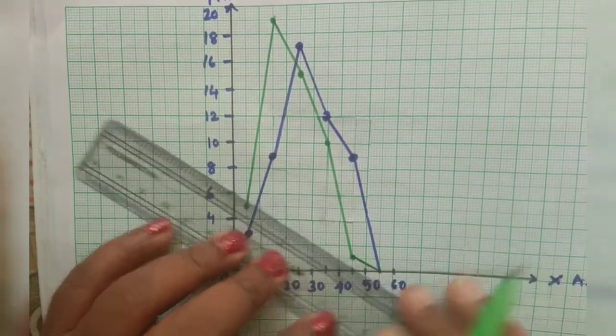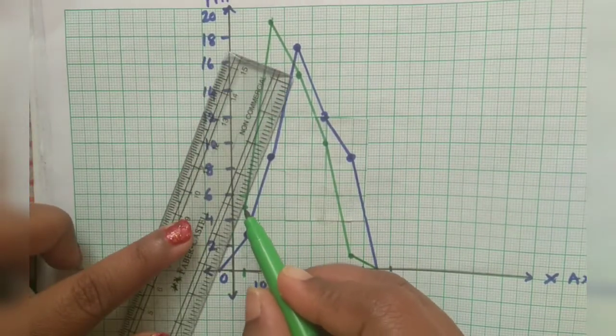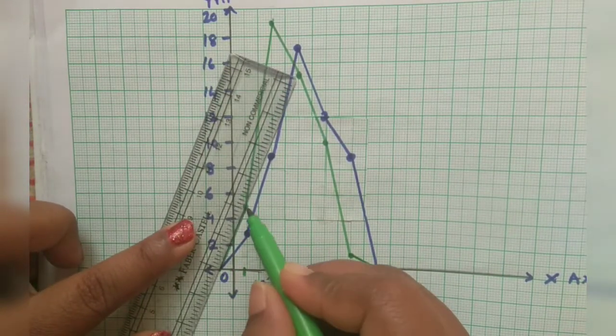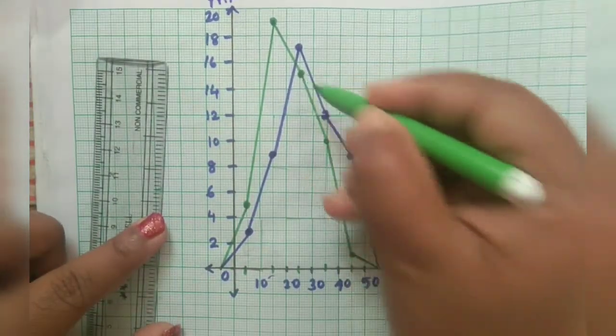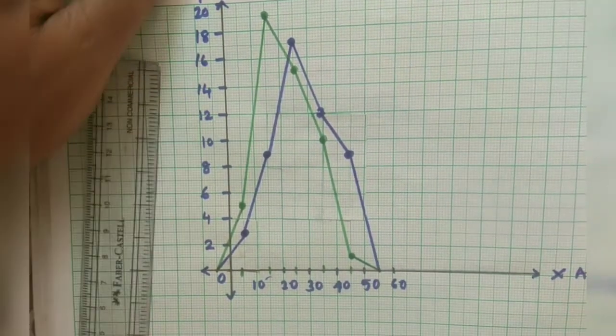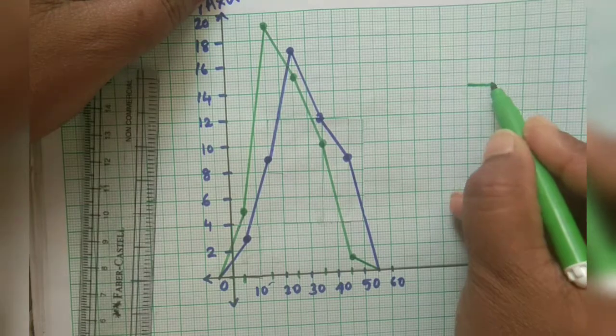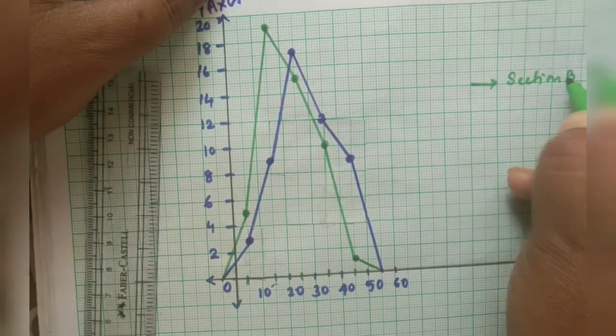Since it is not touching the x axis you have to see that it touches the x axis by joining the before and the after class mark of the first class interval and the last class intervals. Now you can see this is how you have to construct a frequency polygon when it is two cases.